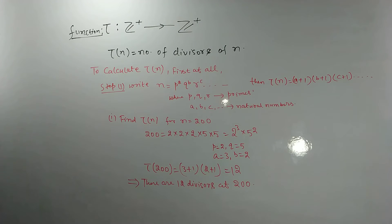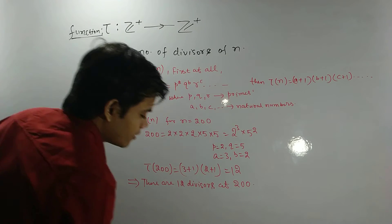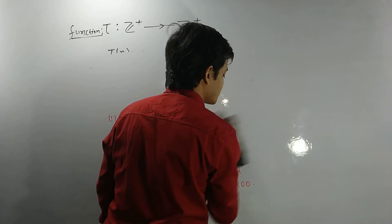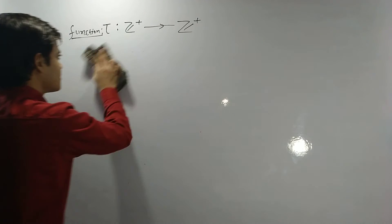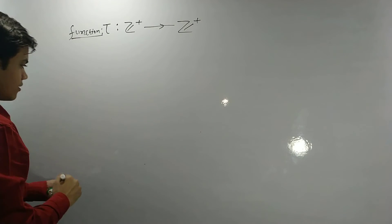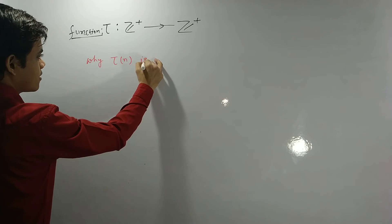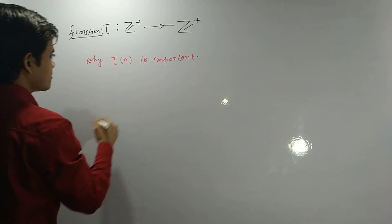But okay, so please write it down. Now my next question is, why is this Tau(n) so important? Why is this Tau(n) important? And the answer is so simple.